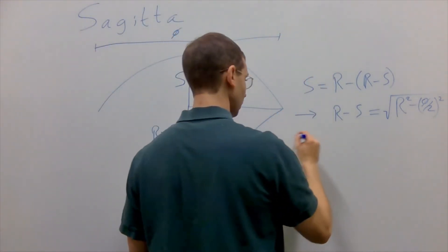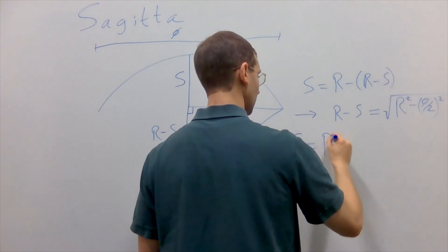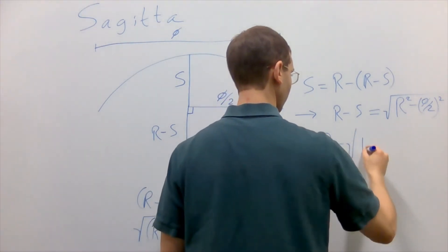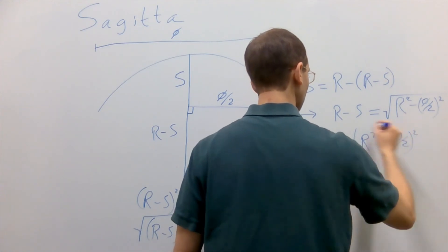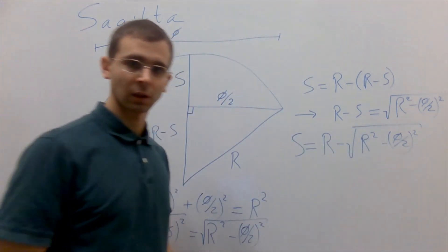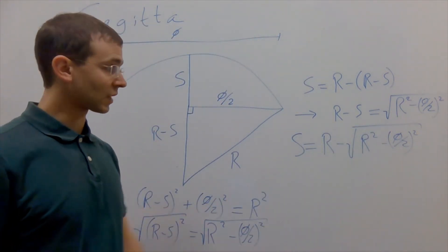Substituting that into this equation, we get that SAG is equal to radius minus the square root of radius squared minus phi over 2 of the quantity squared. And that's what we call the SAG equation.